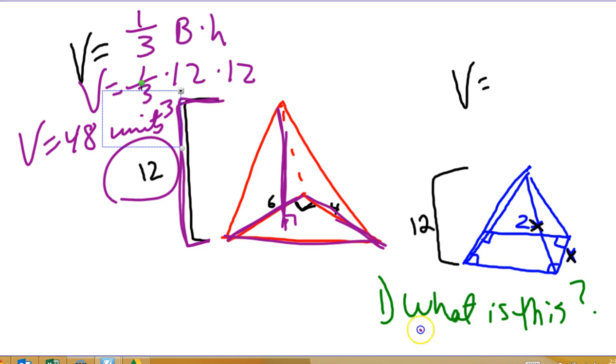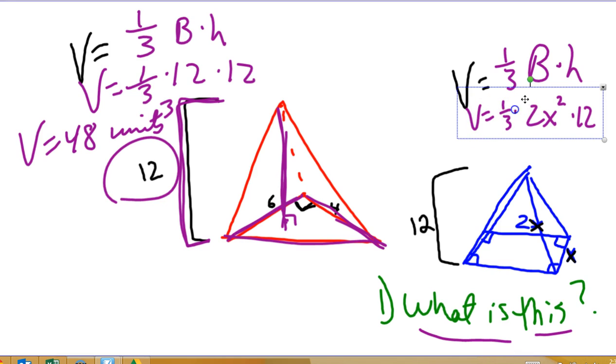All right, how about this one? Well, this is, what is this? This is a rectangular pyramid, all right? So it's still 1 third area of the base times the height. The area of the base, the area of this rectangle is going to be 2x times x. Hopefully, at this point, you understand that's 2x squared times the height of 12. And that's going to be 1 third of 24 is 8x squared. So the volume of that would be 8x squared cubic units.